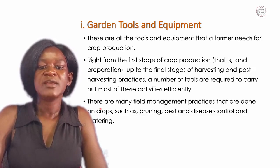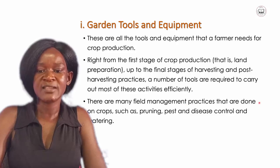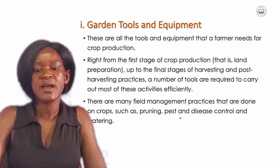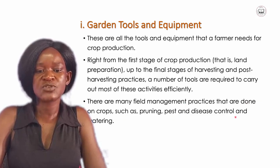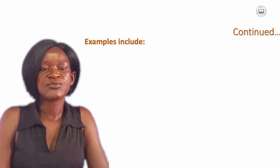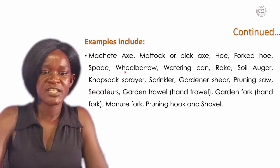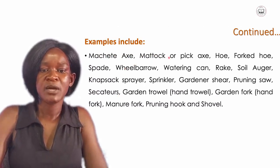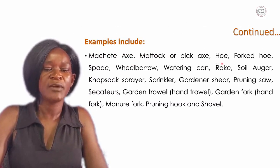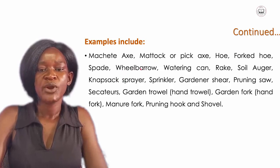There are many field management practices done on crops such as pruning, pest and disease control, and watering — all of which require tools and equipments. Examples of garden tools and equipments include: machete, axe, mattock or pickaxe, simple hoe, forked hoe, spade, wheelbarrow, watering can, rake.